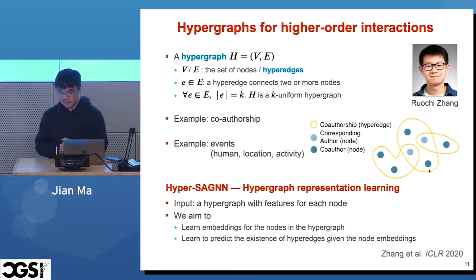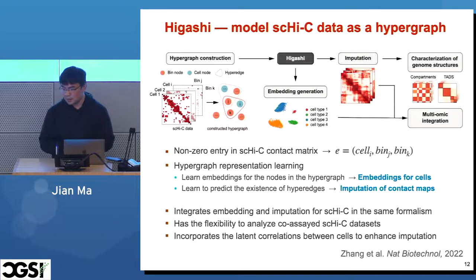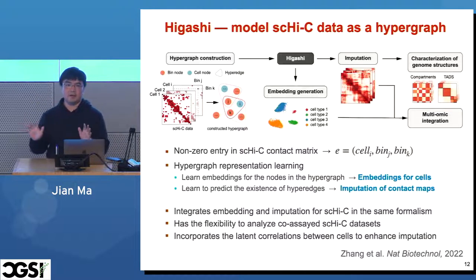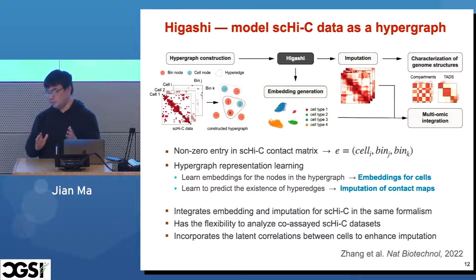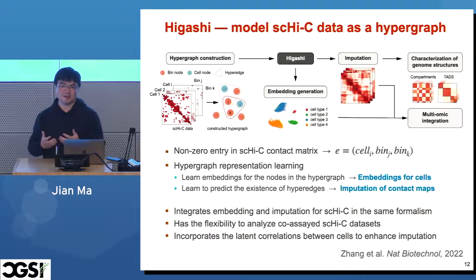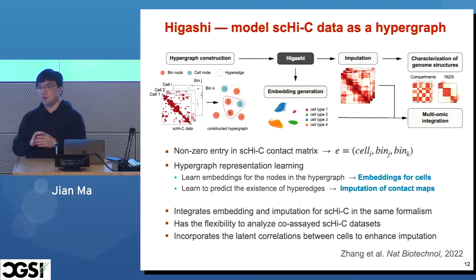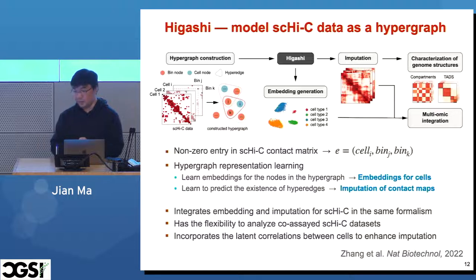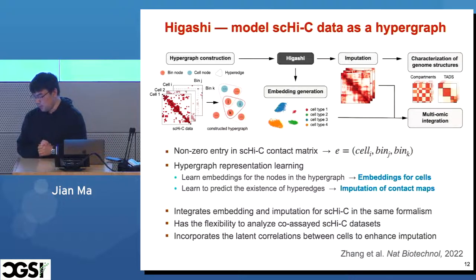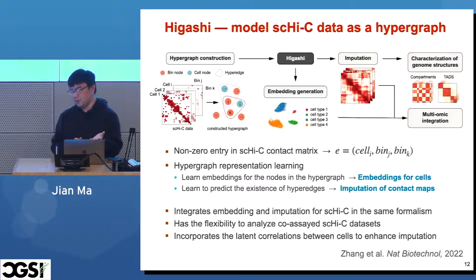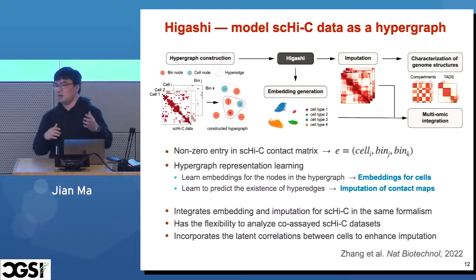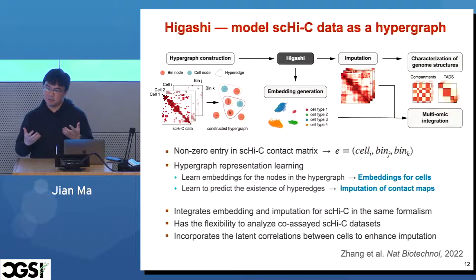We developed a generic framework called HyperSAGIN, which achieves two goals in one formulation: first, learning the embeddings of nodes in the hypergraph — a hyperedge-aware representation; and second, predicting the existence of hyperedges given node embeddings. This was published earlier at a machine learning conference. Now we want to apply and tailor the HyperSAGIN framework for our genomics context.